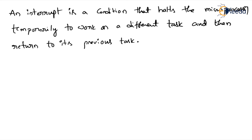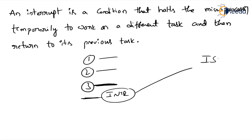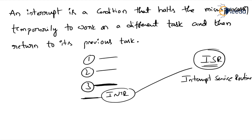Whenever an interrupt occurs, the processor completes the execution of the current instruction first. Suppose while executing instructions one, two, three, the interrupt comes at the third instruction — it finishes executing that instruction, then goes to the ISR. ISR is a program that tells the processor what to do when the interrupt occurs. We can also call it an interrupt handler.